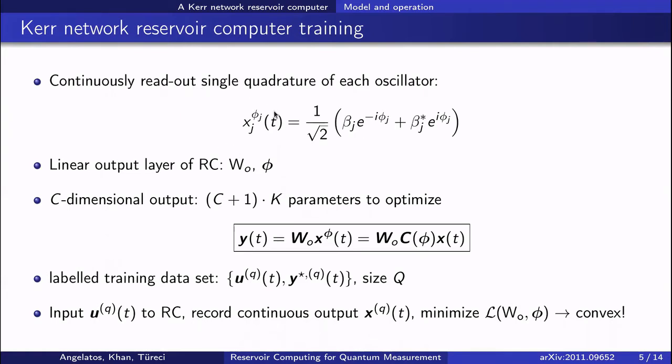We're going to read out one out of the two orthogonal quadratures for each Kerr oscillator, and this measurement angle can be trained as part of the standard linear output layer for reservoir computing. Training is done by inputting labeled signals into the reservoir computer, recording the resultant output, and then minimizing a cost function with respect to this output and these target labels.